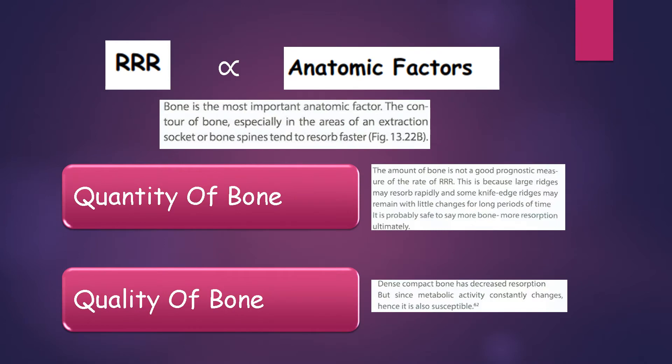Residual ridge resorption is proportional to the anatomic factors. Of the factors mentioned above, bone is the most important anatomic factor. The contour of the bone, especially in the areas of extraction socket or bone spines, tends to resolve faster. The quantity of bone and quality of bone are two important factors of residual ridge resorption.